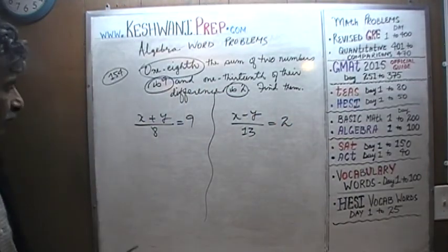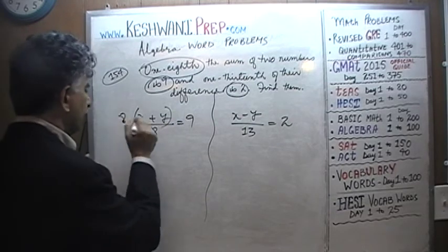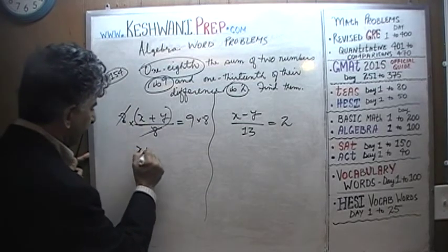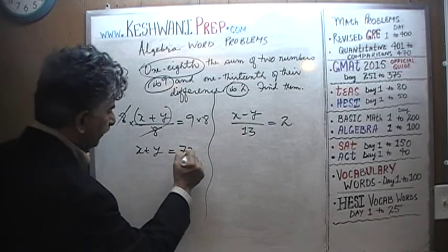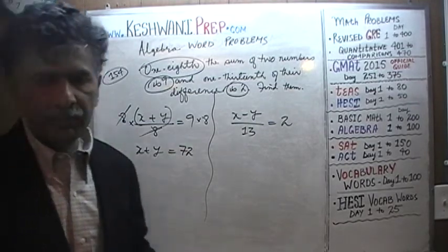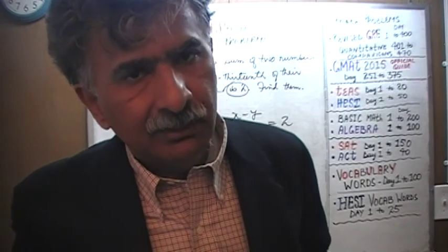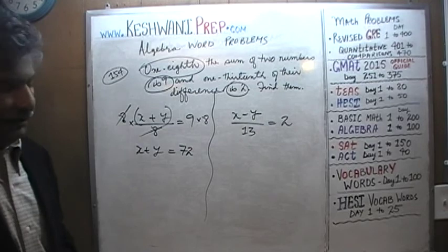Let's get rid of this 8 from the bottom by multiplying both sides of the equation by 8. The 8 goes away and what we end up with is X plus Y equals 8 times 9, which is 72. How do we know that? Because 10 eights would have been 80, we don't have 10 eights, we have 9 eights, so 80 minus 8 is 72.